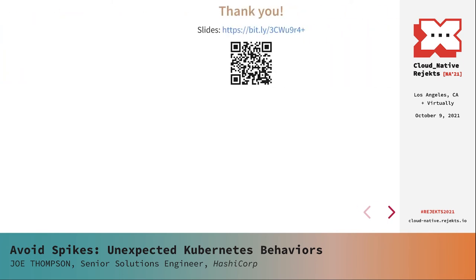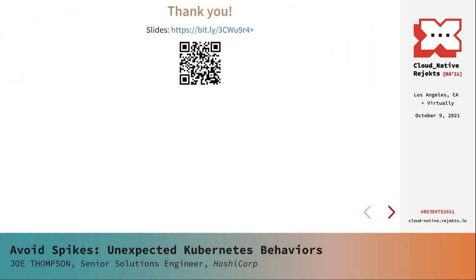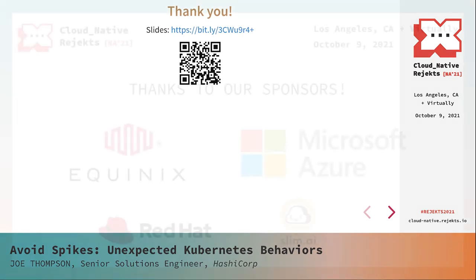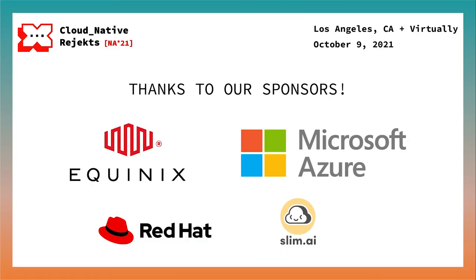Here's that QR code I promised earlier — this one takes you to the copy of these slides posted online. There's a slide after this one with some relevant links for extra reading material if you want to dig into various things I went through over the course of the last approximately half an hour. After that, if there are any errors I know of or find out about later, the very last slide will be for errata. I hope this was helpful, and as always, thanks so much for showing up. Thanks to Microsoft Azure and Equinix Metal for supporting us at the champion level, and to Red Hat and Slim.ai for funding us at our supporter level.